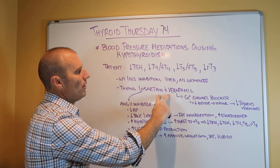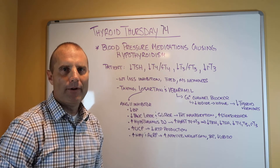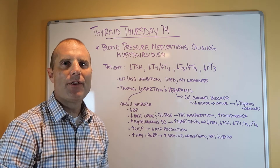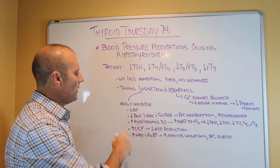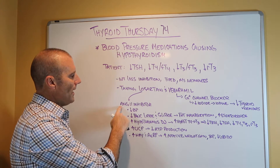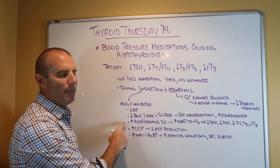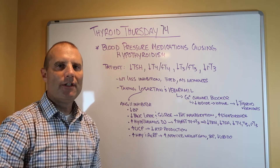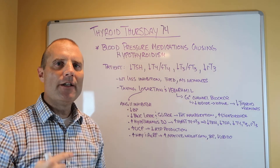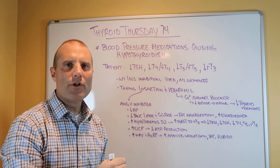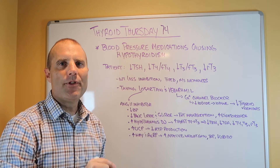She's taking two blood pressure medications — Losartan and Verapamil — and both of these inhibit thyroid hormone production. Losartan is an angiotensin II inhibitor, but the problem is that when you take Losartan, it increases hypothalamic conversion of T4 to T3 in the hypothalamus, which is an area in the brain.